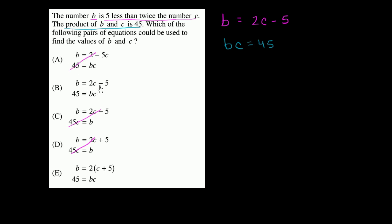b is equal to 2c minus 5. Well, that's exactly what I wrote here. bc is equal to 45. That's exactly what I wrote here. So this is going to be our choice.